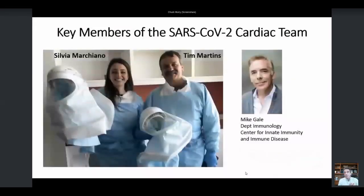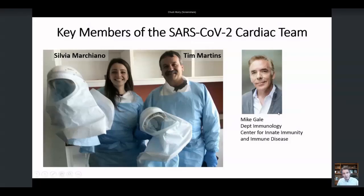I want to start with perhaps the most important slide, which is to acknowledge the members of my group that really made this happen, in particular a postdoc named Silvia Marchiano. Silvia is Italian, and while this started back in March when the pandemic burst out, we decided to make a pivot. Silvia went to the highest concentration of live COVID-19 virus in the Pacific Northwest, which is behind a barrier facility run by our colleague from immunology, Michael Gale, who's a virologist and immunologist. Tim Martins has also moved our high throughput screening facility into the barrier facility and we're looking for anti-COVID drugs, but that'll be a story for another day. Silvia did the cardiac disease modeling.